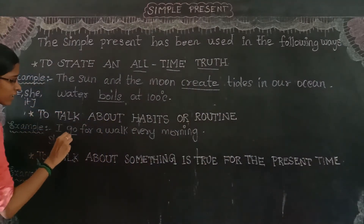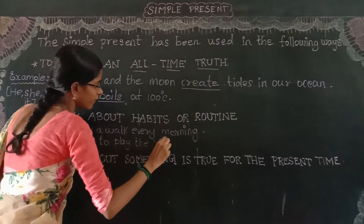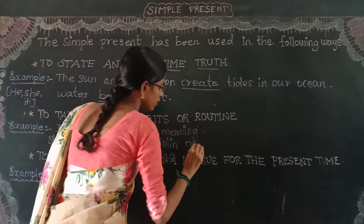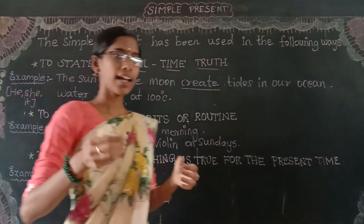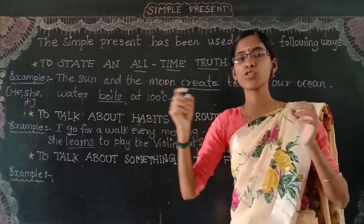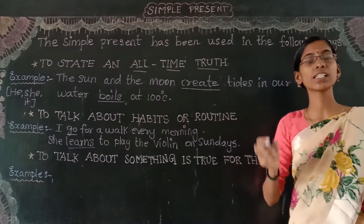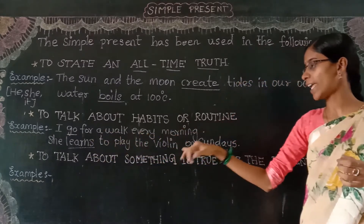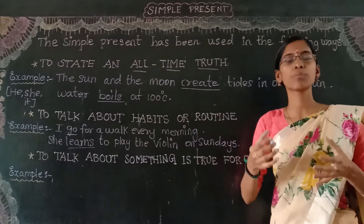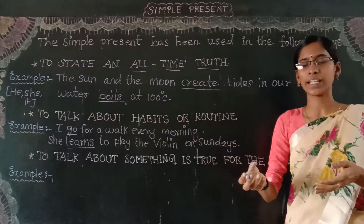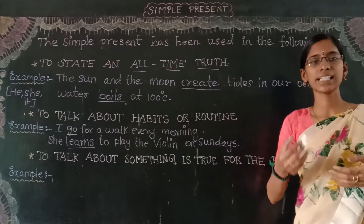Another example: 'She learns to play the violin on Sundays.' The verb is 'learns' because in front of it we use the pronoun 'she.' As I told you, after he, she, or it, the verb must take the -s form for simple present tense. On every Sunday she goes to violin class and learns to play the violin — it refers to her Sunday routine. So if we talk about a habit or routine of a particular person, you can use present tense.